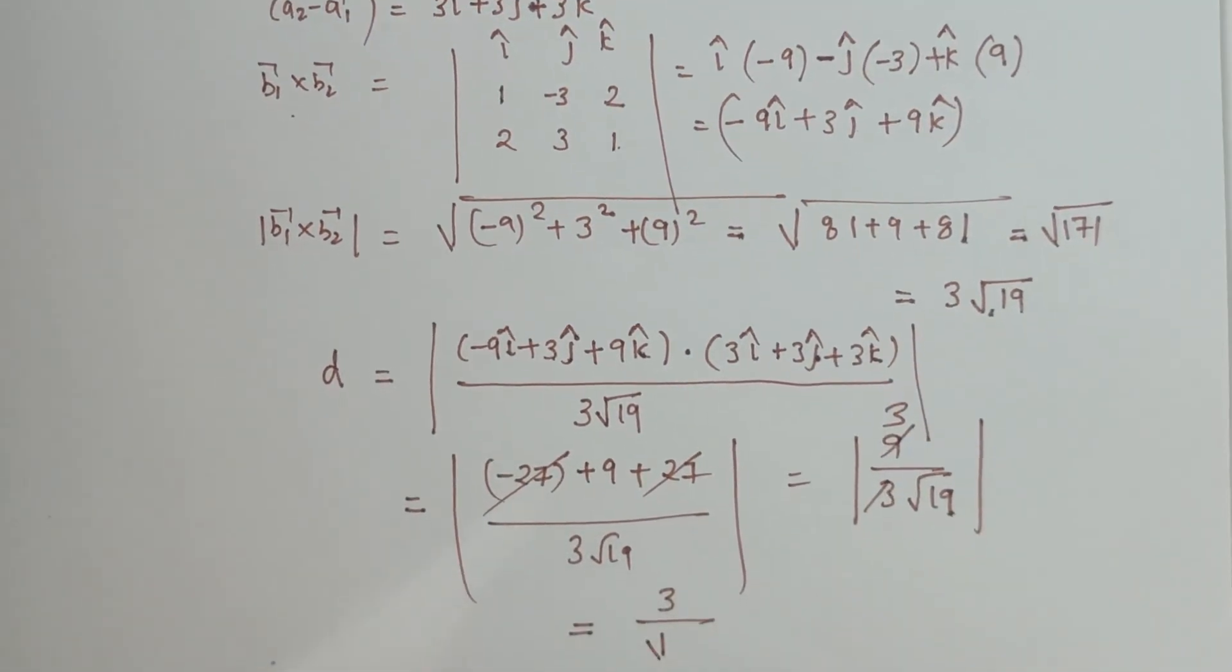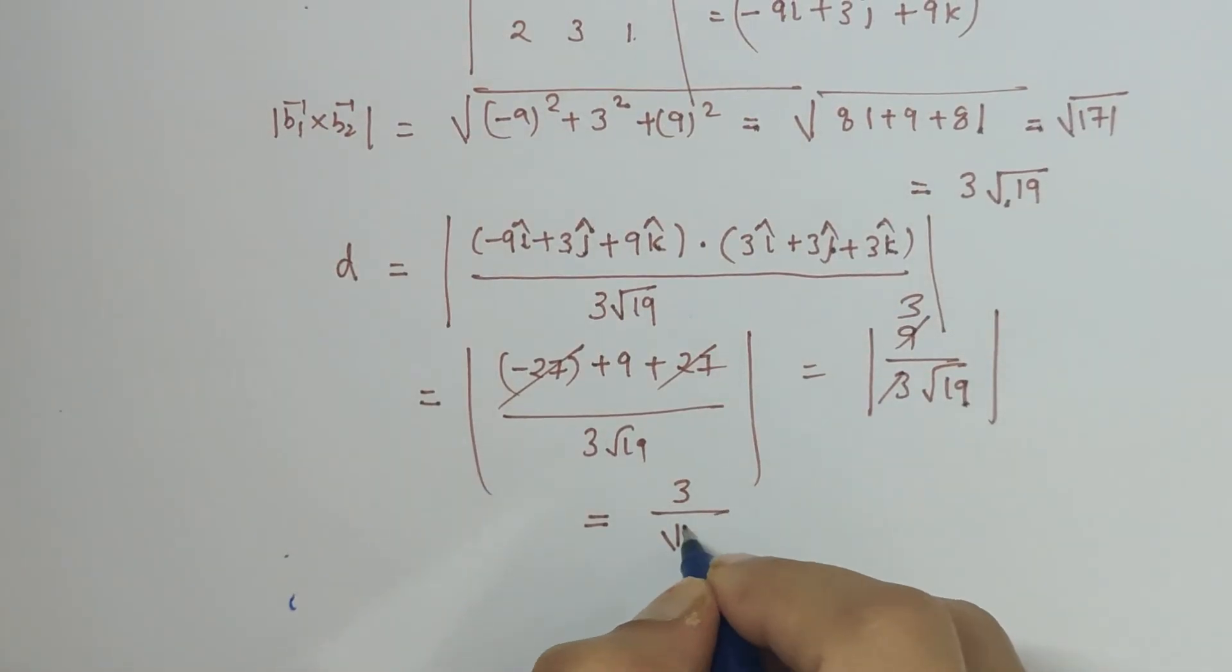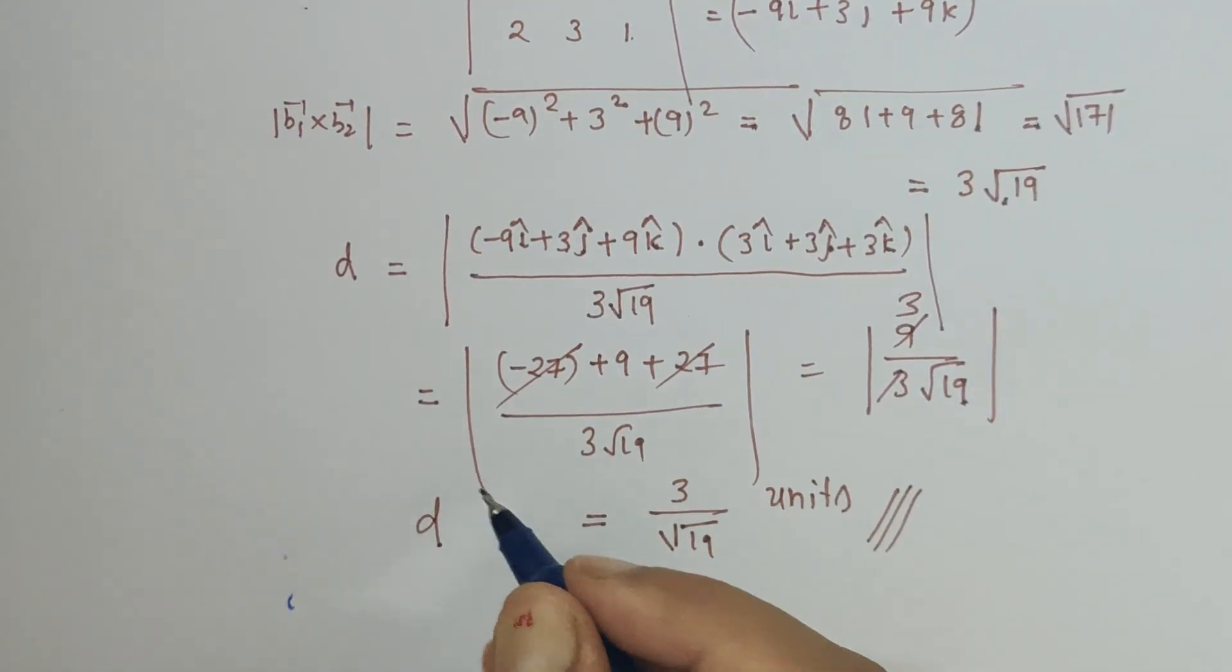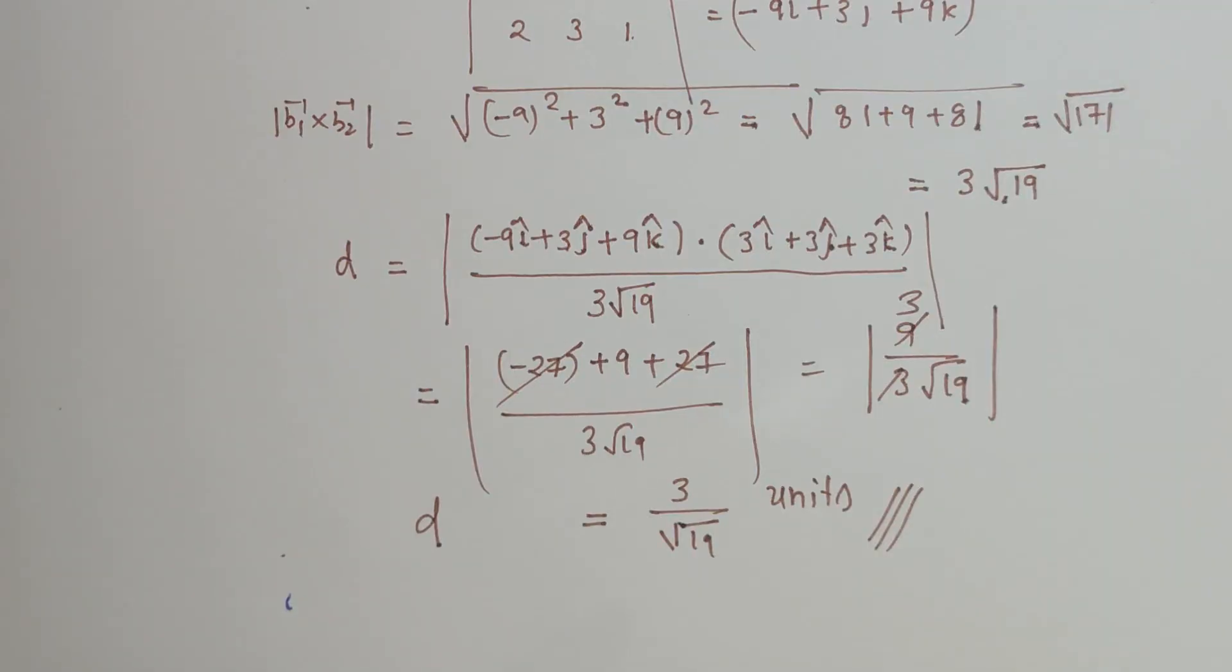So this is the distance between the given two lines given in vector form. Likewise, if you have any other problem, you can write in the comment box and in a very short span of time solution will be provided to you. Thank you.